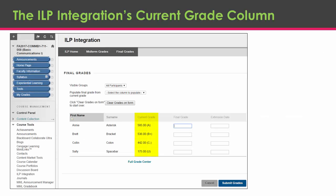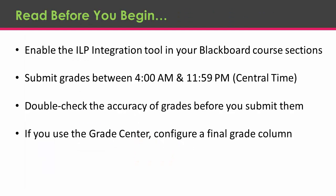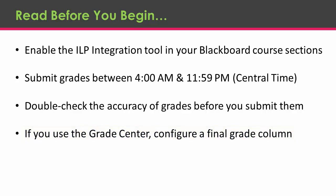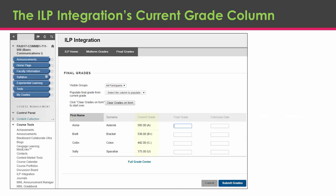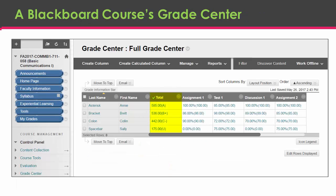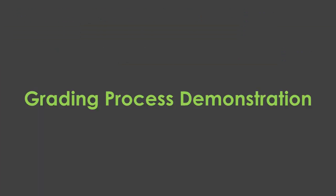Faculty who use Blackboard's Grade Center will notice that the ILP Tool's Current Grade column will display letter grades for your reference. If you want to use this feature to support your grading, review our video demonstration and tutorial to configure a final grade column for ILP. This will ensure that the current grade column accurately reflects your Grade Center's calculations.